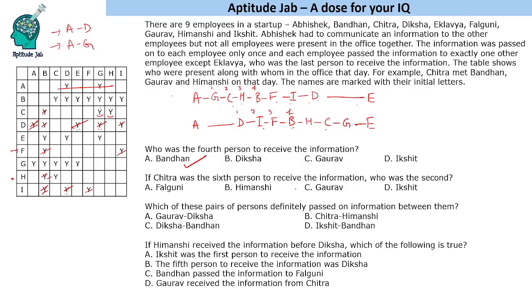If Chitra was the 6th person to receive the information, who was the 2nd? Chitra is the 6th person, so we consider the relevant case. The 2nd person in that case is Ikshet. Chitra is the 4th, 5th and 6th — counting through the chain confirms this.